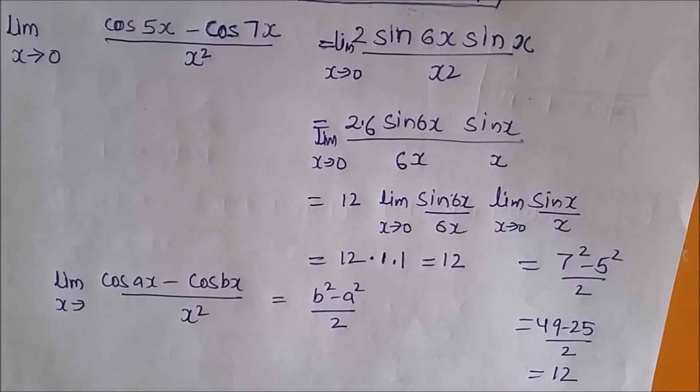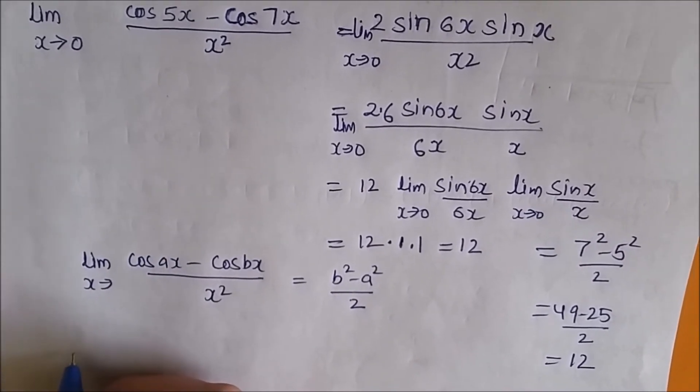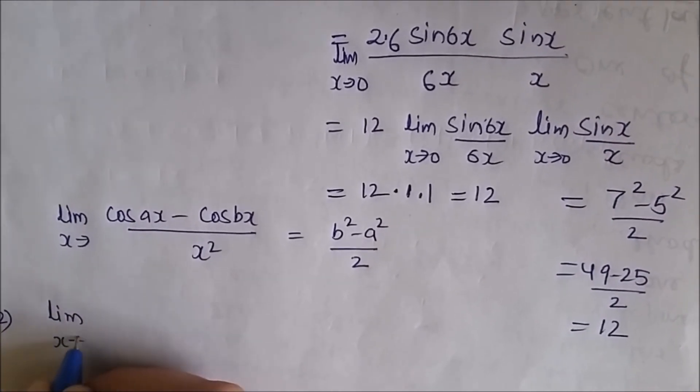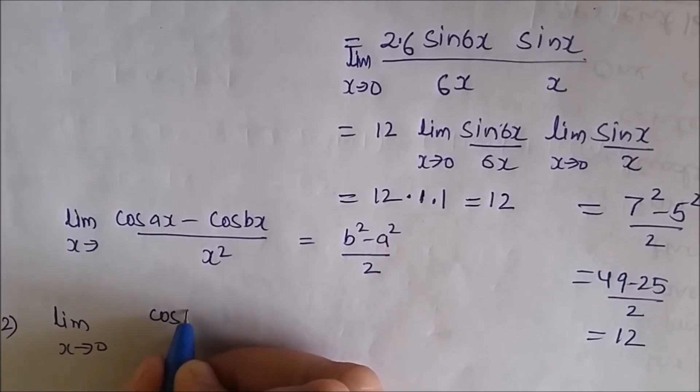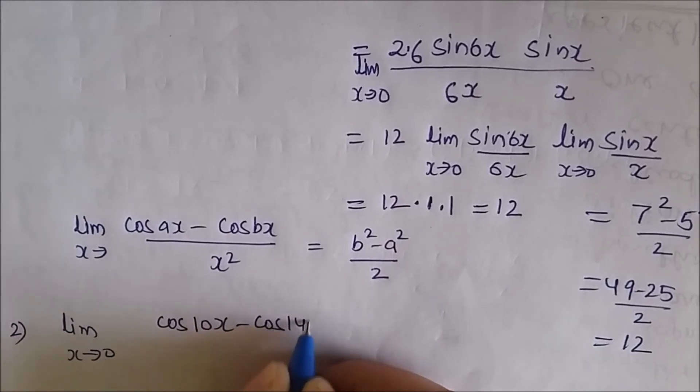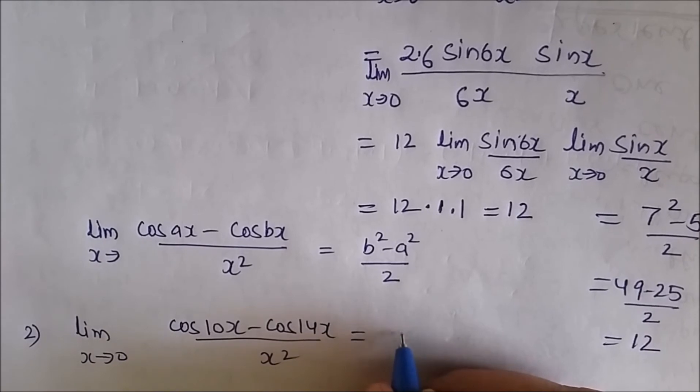To make you understand better, let me give one more question. This is question number 2: limit x tends to 0, (cos 10x - cos 14x) / x². So directly you can say this is (14² - 10²) / 2.